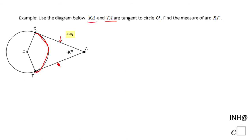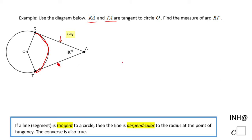The first thing I would like you to take a look at is this theorem statement down here. If we have a tangent to a circle, that tangent is perpendicular to the radius.